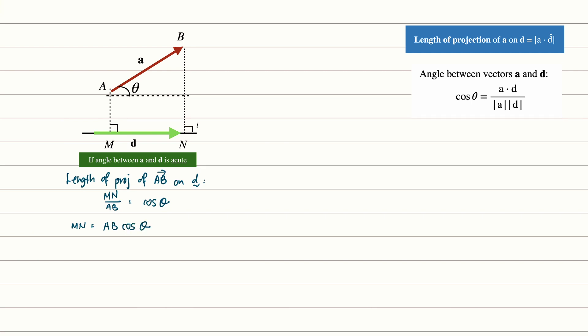Now do note that we are getting the length so we are only interested in the magnitudes of ab and mn. Now this will mean that the length of vector ab is simply the modulus of a, and cosine theta is the acute angle between a and d given by a dot d over the modulus of a modulus of d. Now simplifying we will have a dot d over modulus of d. Now d over mod d is also known as the unit vector of d.